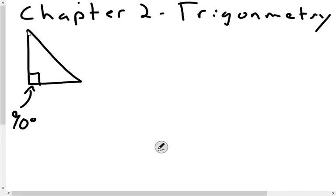What else do we remember about triangles? All three angles add up to 180. So if this is 90 degrees, these other two angles here also add up to 90 degrees, right?